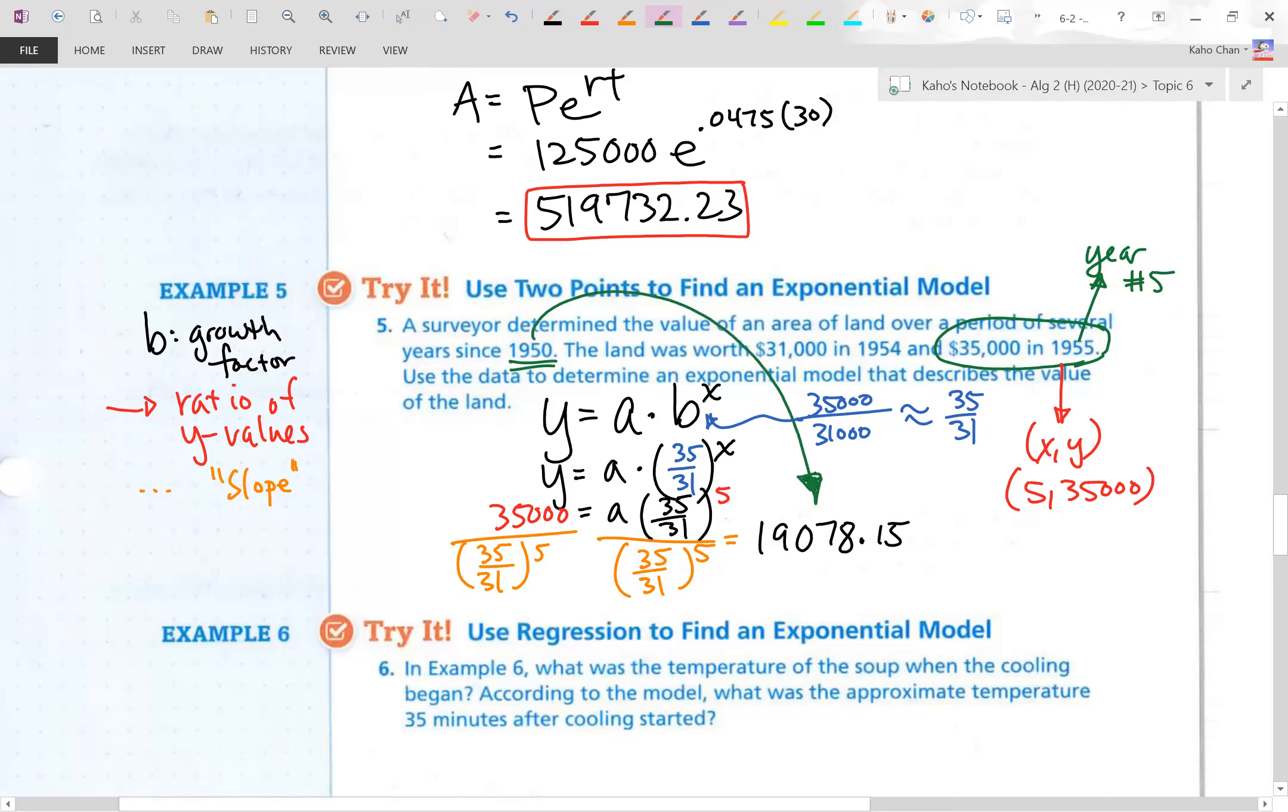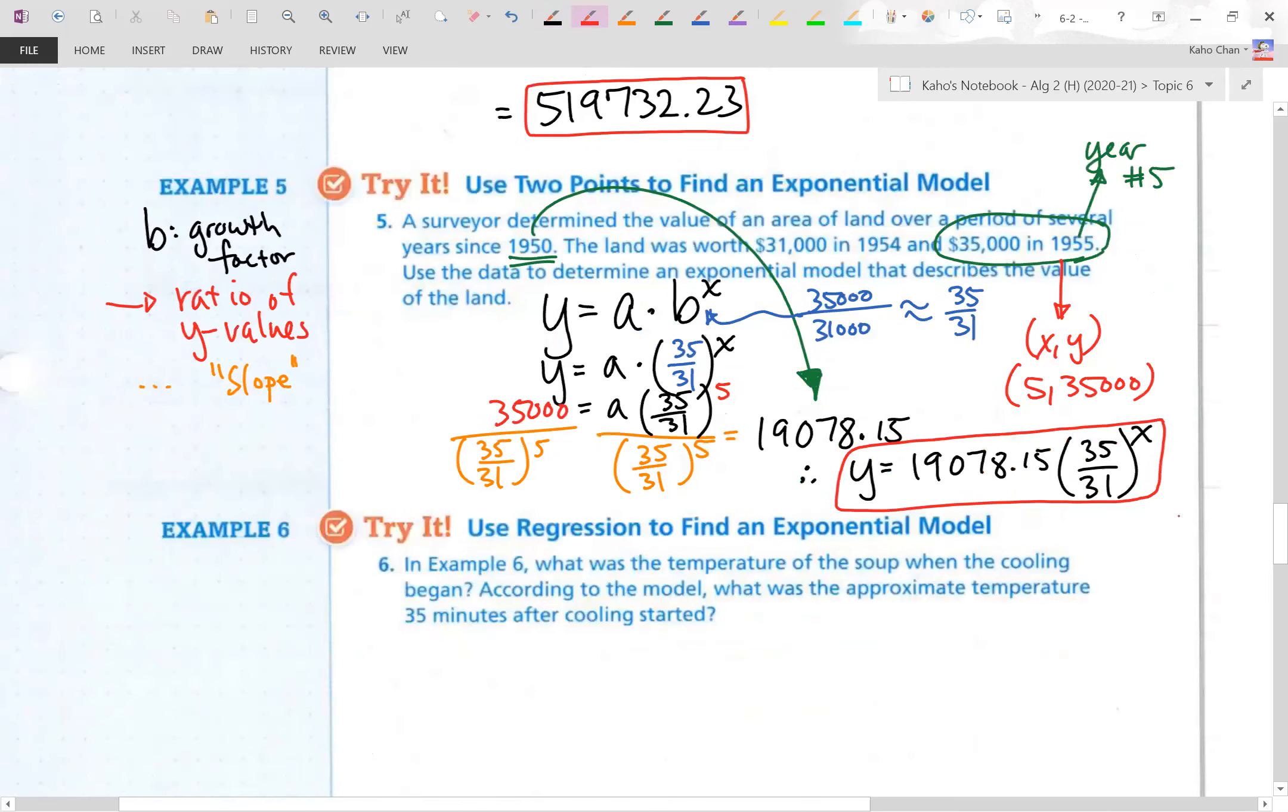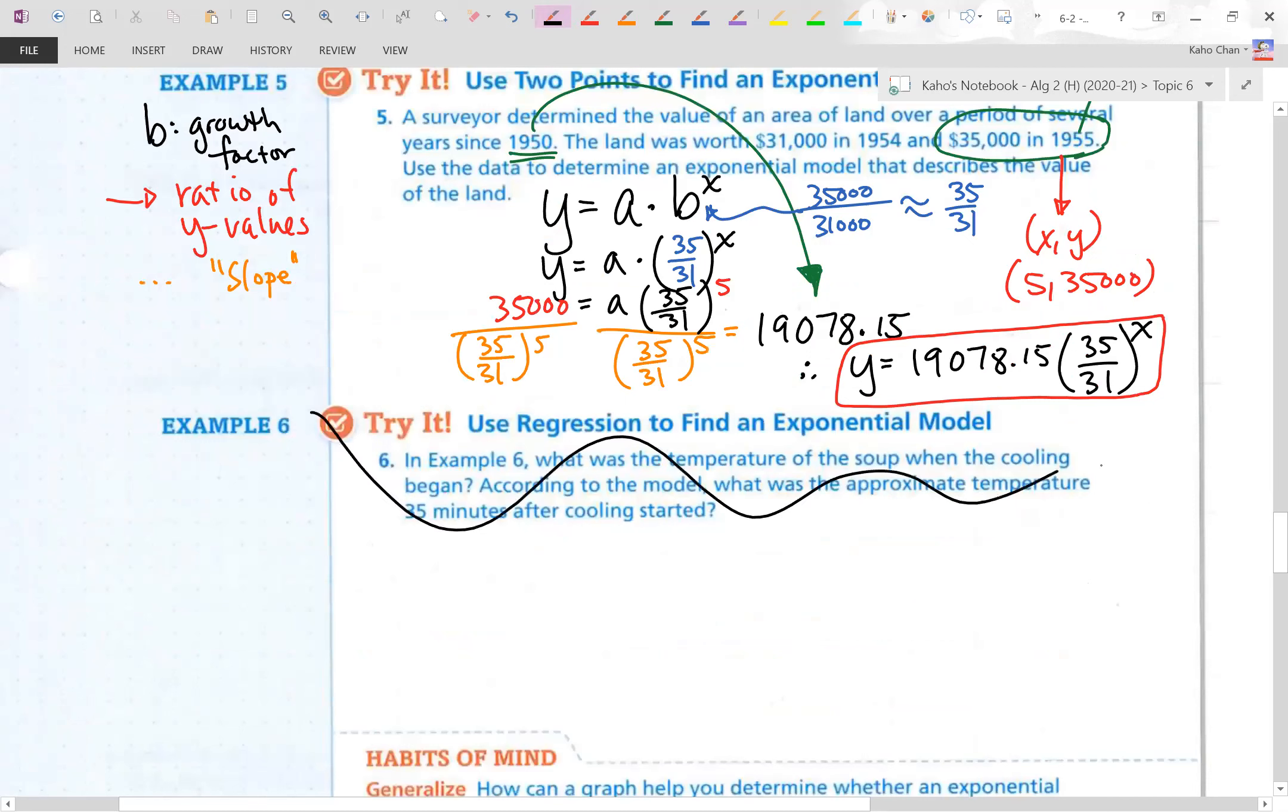So, now that I know what A is, I can now write my function. Y equals $19,078.15 times a common base of 35 over 31 to the power of X. And that is my generic formula based off of data collected from that year. Those two years. All right. I'm going to skip example six. It's actually been done in the book. Let's go to the last page and turn out some numbers here.